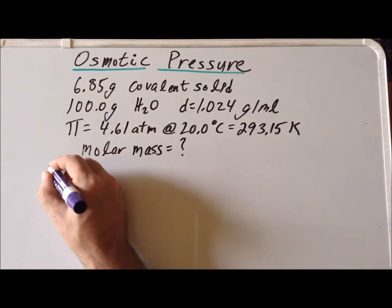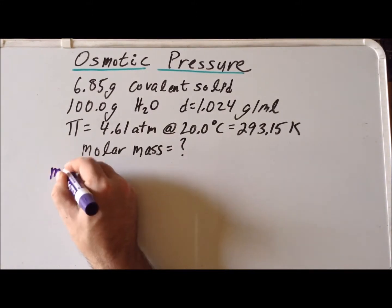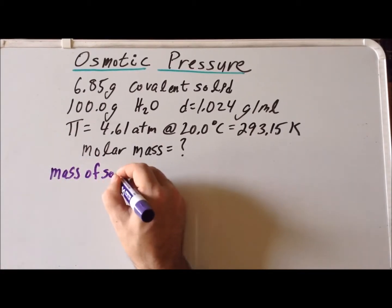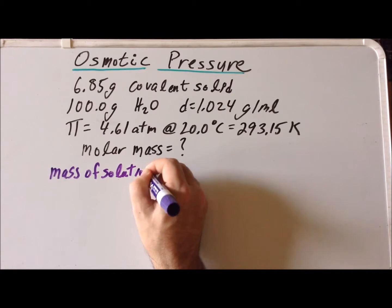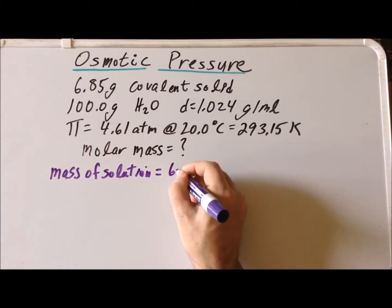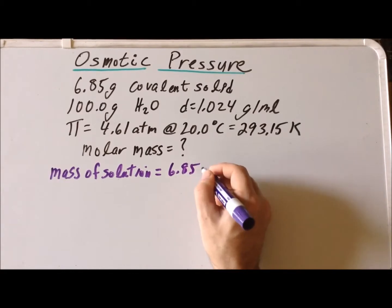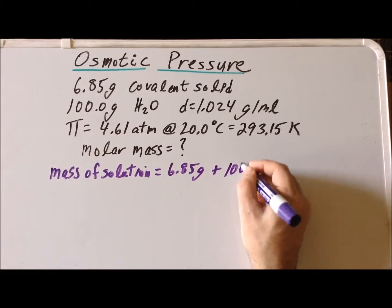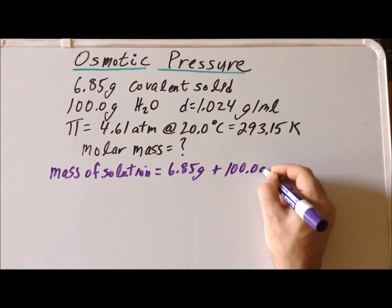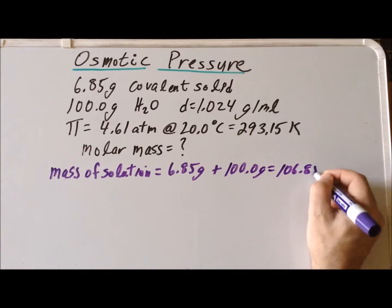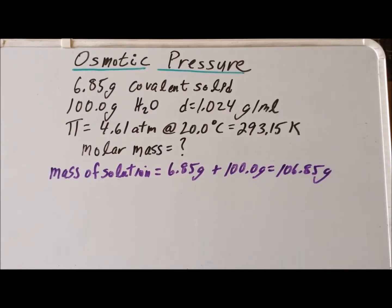Next, we want to find the mass of the solution. To do that, we add the mass of the solute, which is 6.85 grams, plus the mass of the solvent, which is 100.0 grams, and we get 106.85 grams as the total mass of the solution.